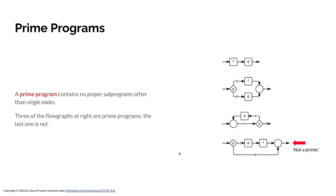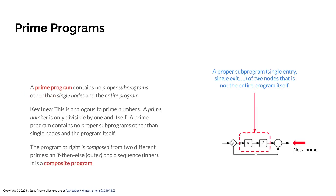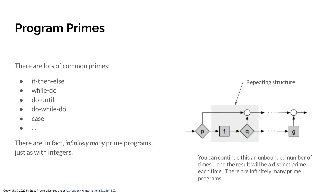Putting that together, we wind up with a key idea: we can compose programs from primes, or uniquely decompose a program into a product of primes — little prime programs. The resulting program built out of primes is called a composite program. There are lots of common primes: if-then-else, while-do, do-until, do-while-do, case, and more. In fact, you can demonstrate that there are infinitely many prime programs, just like there are infinitely many prime integers.